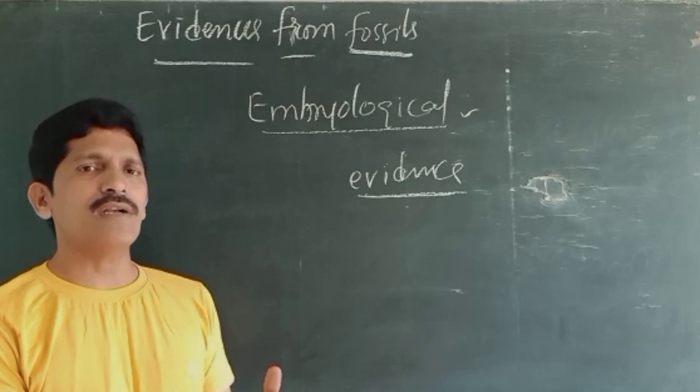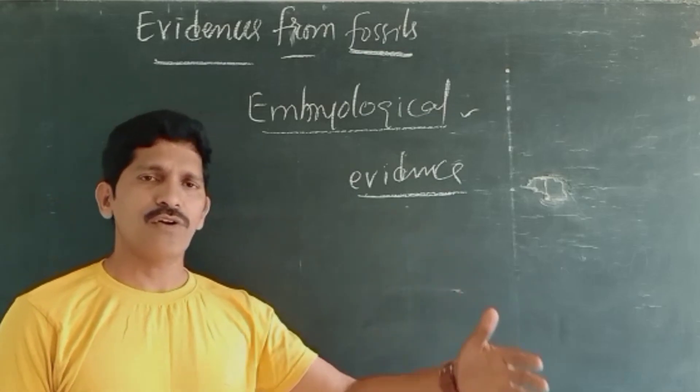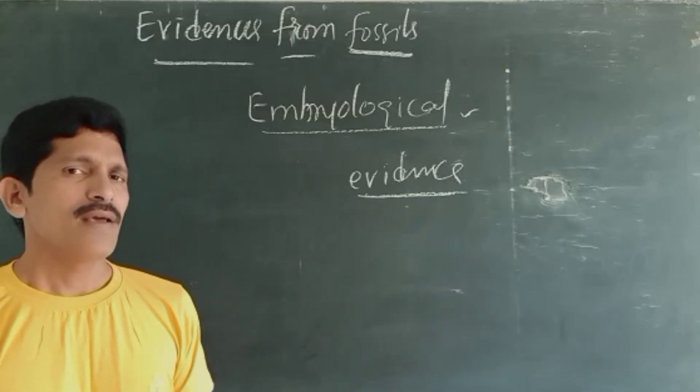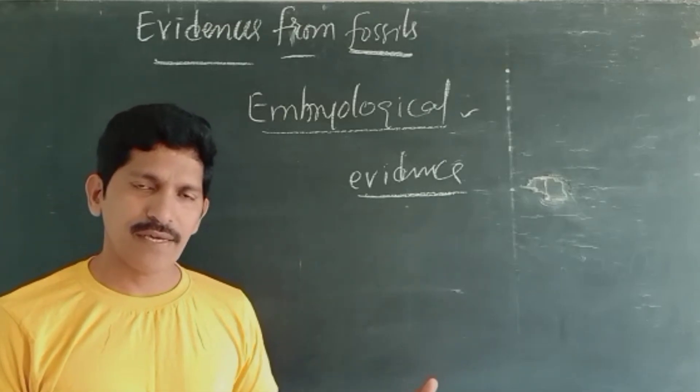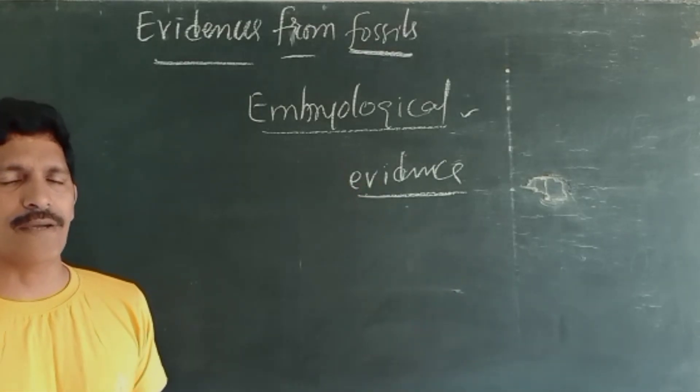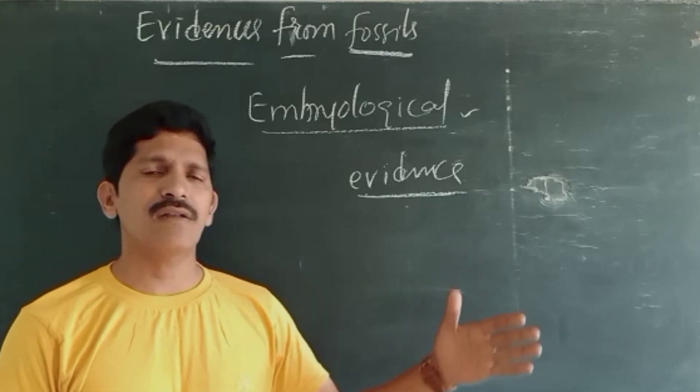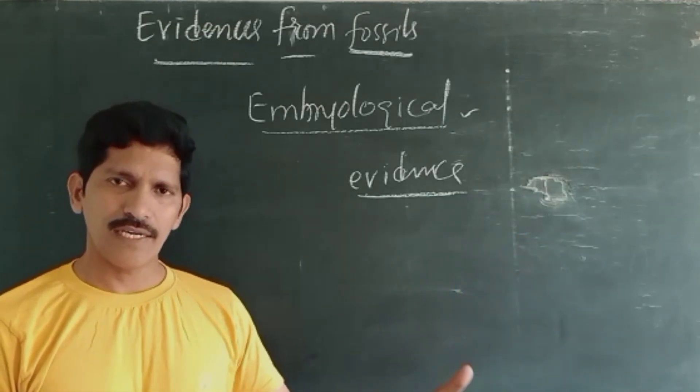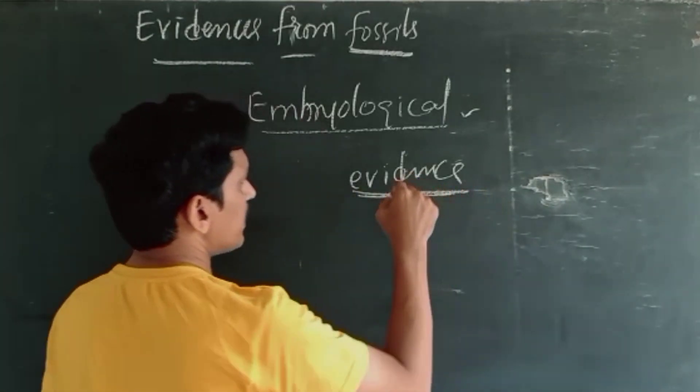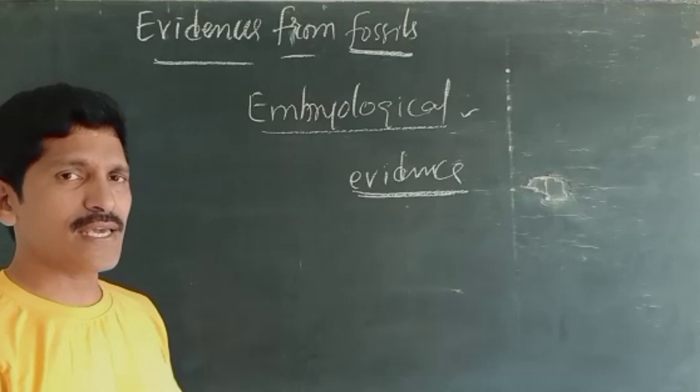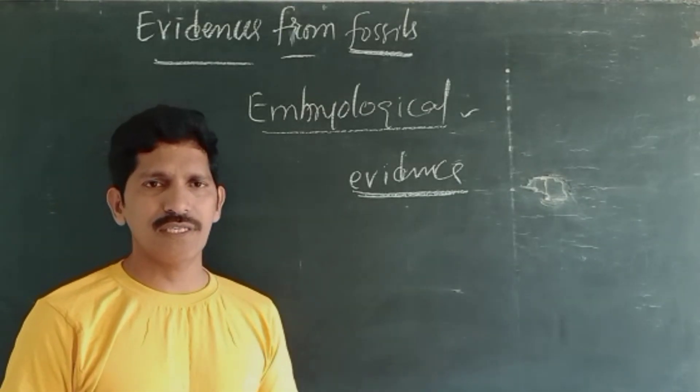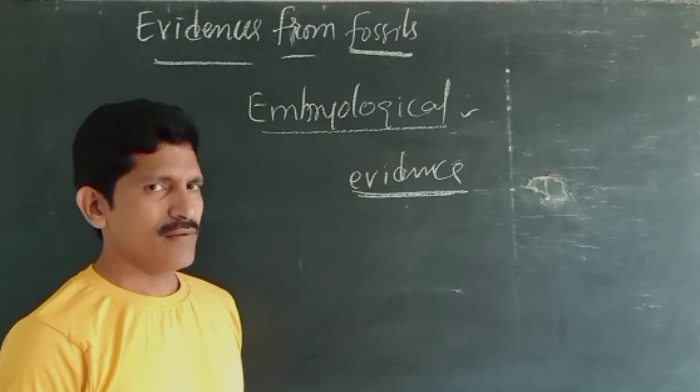So that we cannot differentiate the organism. This is a pig embryo, this is a salamander embryo, this is a bat embryo, this is a human embryo. We cannot separate, we cannot distinguish the species. Why? Because at the embryological stages, all the species are very much similar to each other. That's what embryological evidence is. So based on the embryological evidence we can say all these organisms once upon a time originated from a common ancestor.